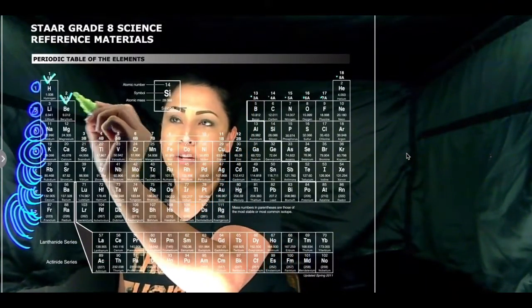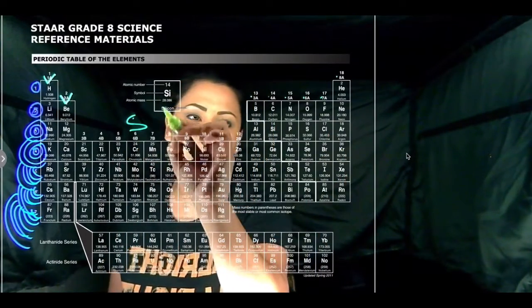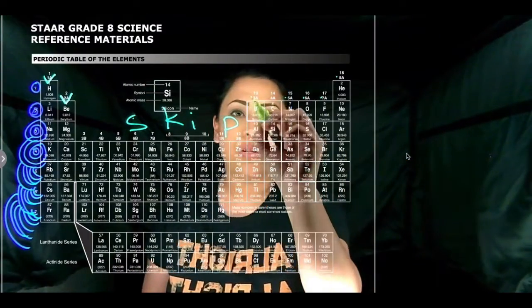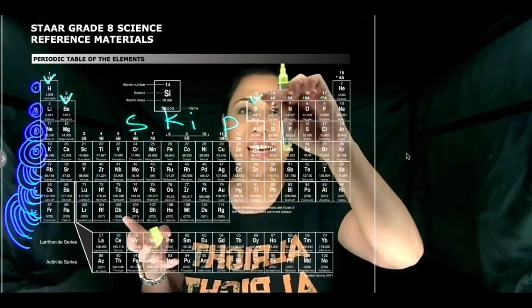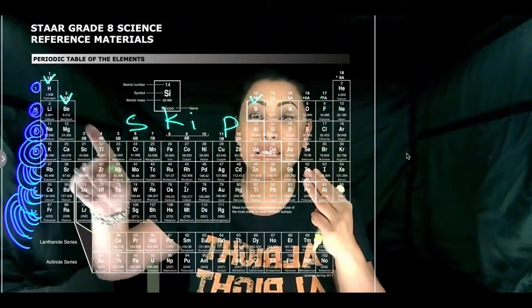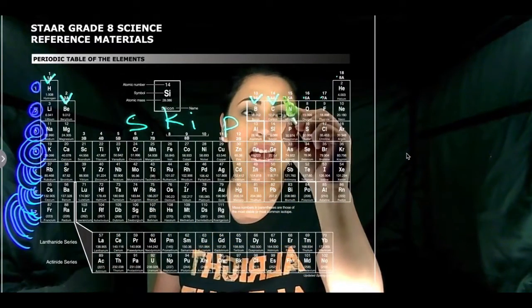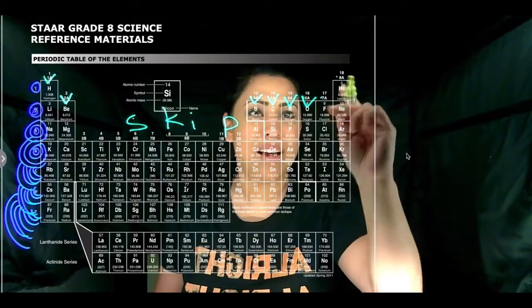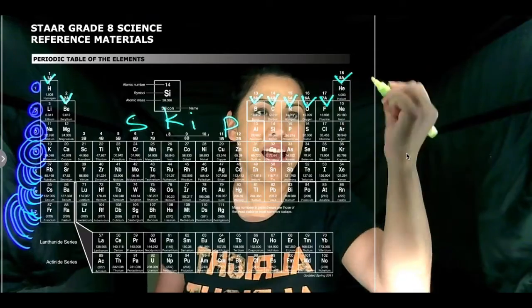Now group two has two valence electrons. We're going to go ahead and skip our transition metals and go over to group 13 has how many? Can you see it? 13 only has three, so we just follow along. One, two, three, 14 has four, 15 has five, 16 six, 17 seven, and 18 has eight.